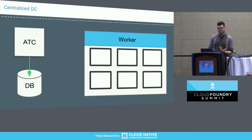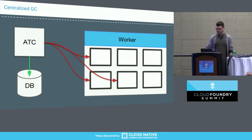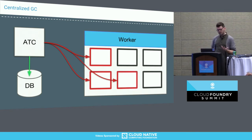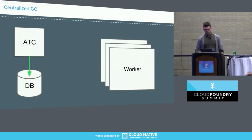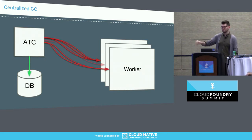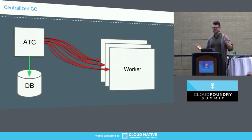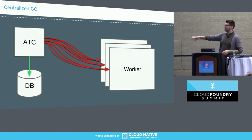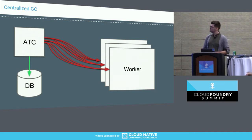Currently the ATC looks in the database at all of the builds that have happened and all the volumes and containers related to them, then goes out to the worker and tells it to delete things. With centralized GC and a large pool of workers, the ATC has to reach out to all of those workers and delete all those resources — and when you have a very large Concourse cluster, this can get really bad really quickly.